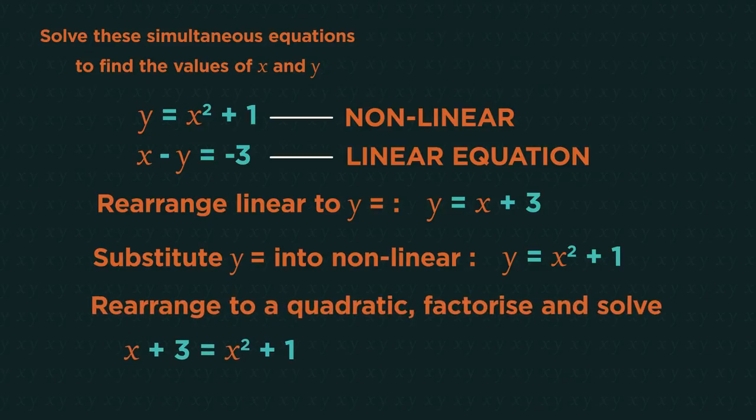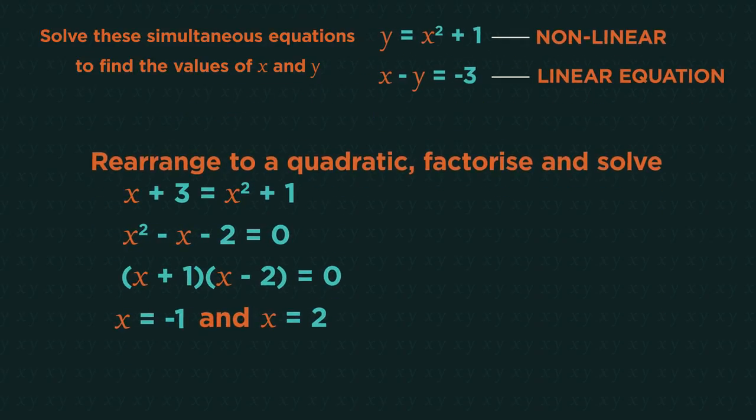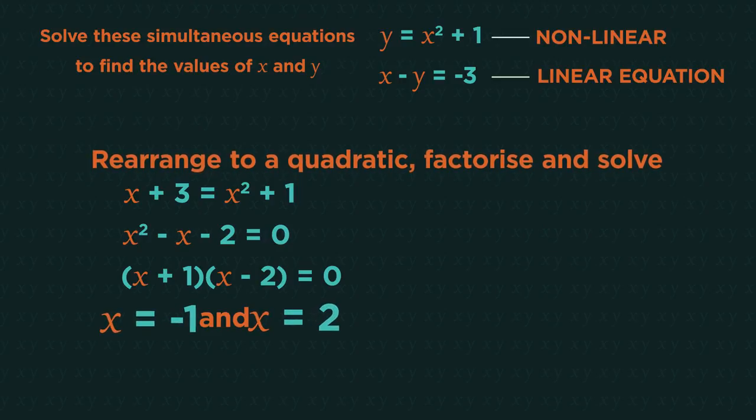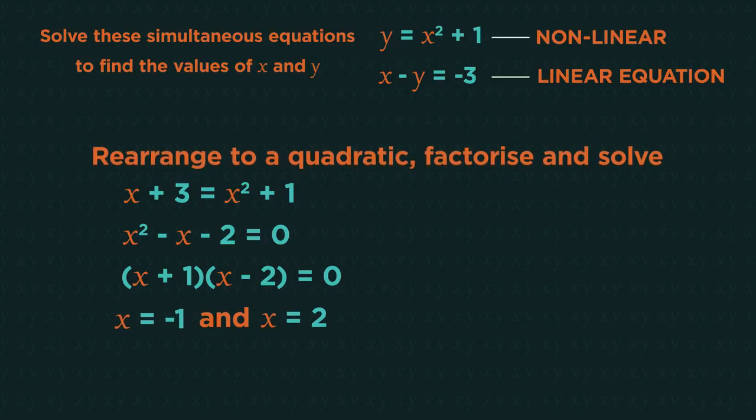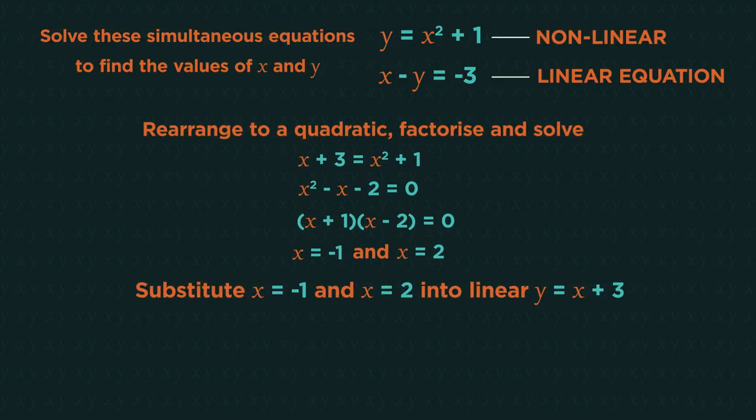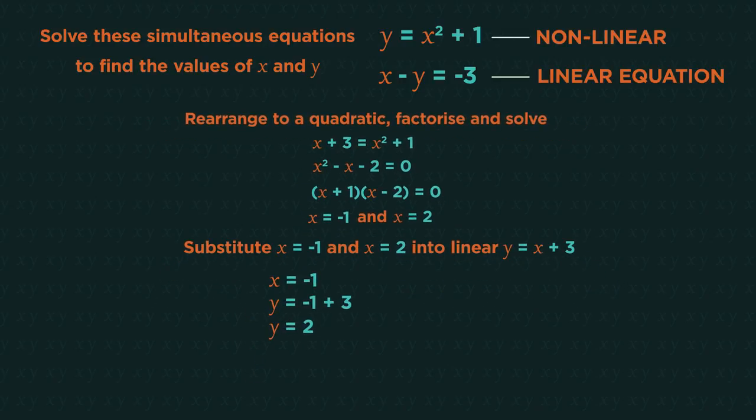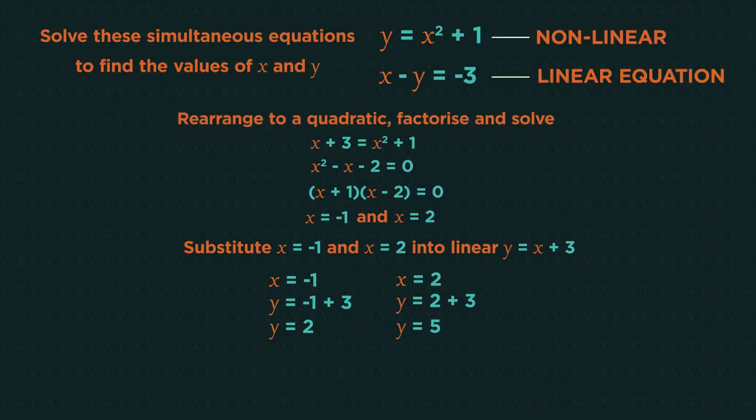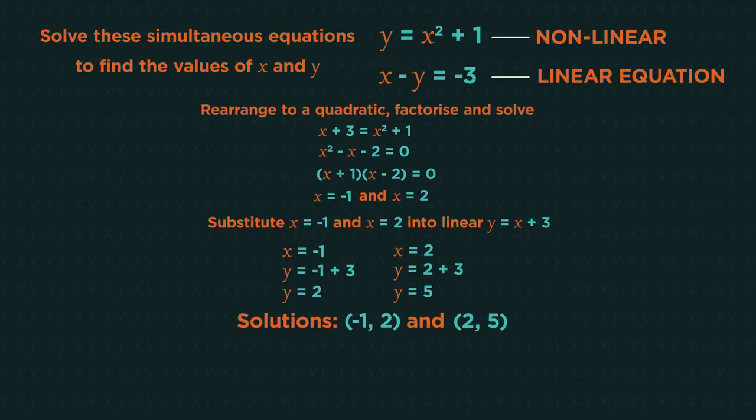Rearrange this to get a quadratic, then factorize and solve it to get x equals negative 1 and x equals 2. Because we have two x values, we need two y values. Substitute the x values into the linear y equals equation. So when x is negative 1, y is 2, and when x is 2, y is 5. So the solutions are negative 1, 2 and 2, 5.